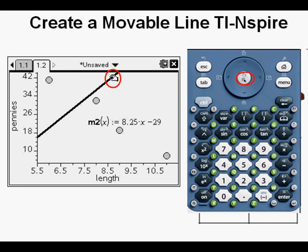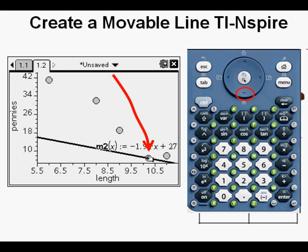We grasp the line by holding down the center of the nav pad again for about a second. Now we arrow down to rotate the right end of the line downward.